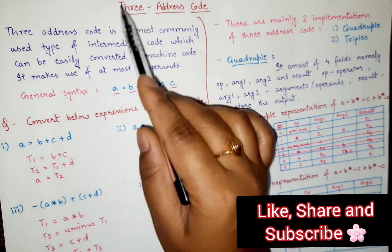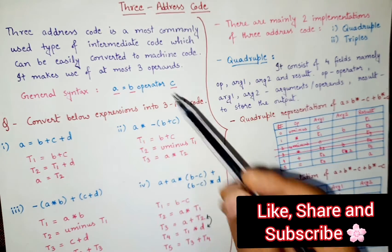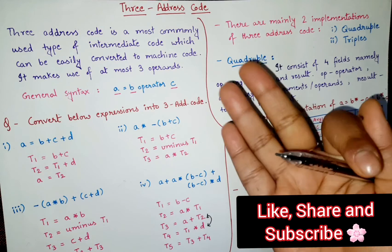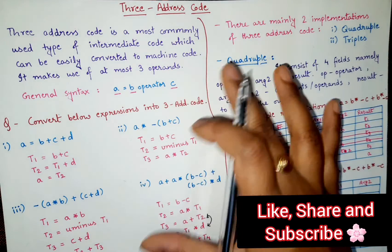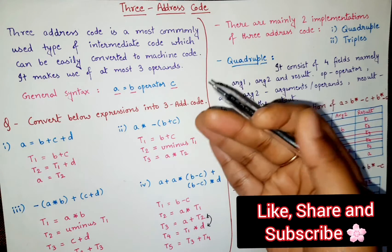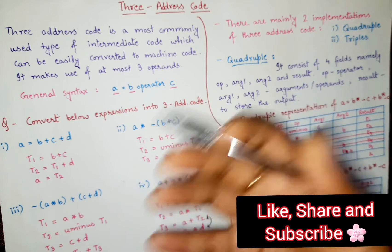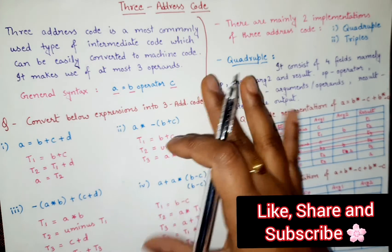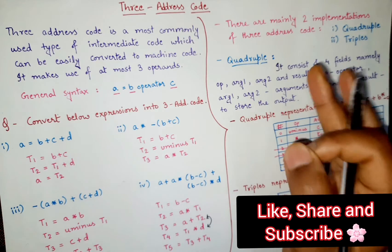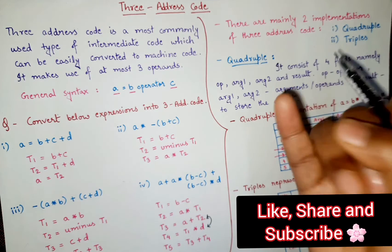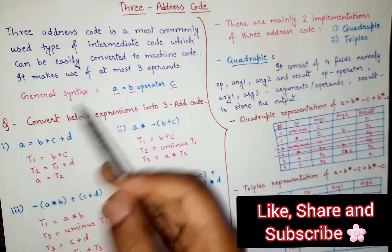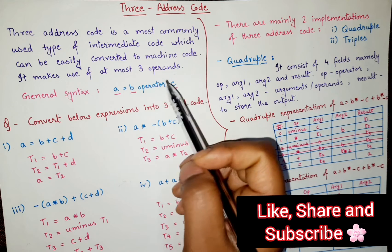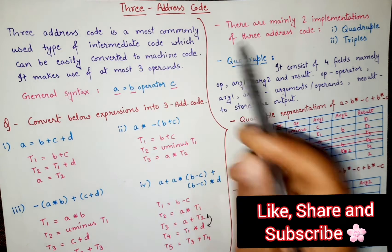Why is it known as 3 address code? Because in 3 address code we are using at most 3 operands. That means you can have 1 operand, 2 operands, or at max 3 operands — more than 3 operands are not allowed. Many students get confused about this: it is very clear that 3 address code can contain a maximum of, or at most, 3 operands. The general syntax is A = B operator C, where the operands are A, B, and C — maximum 3.